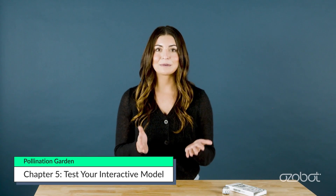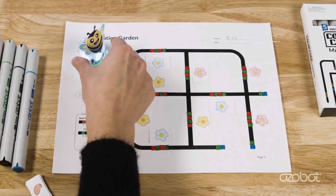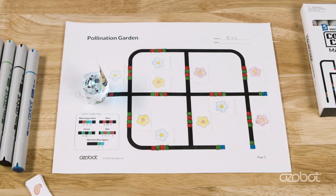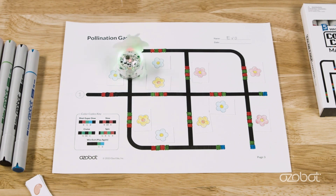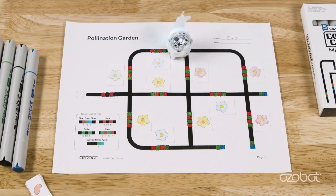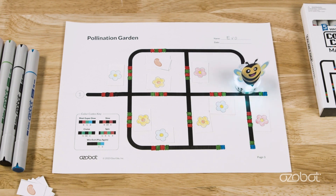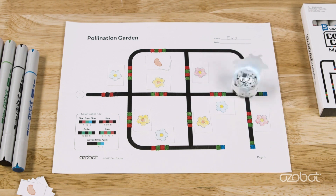Your garden map is complete and your pollinator bot is ready — it's time to test out your model. Put your pollinator on start and watch it move to different flowers in the garden to see which flowers get pollinated. For example, my pollinator first moved to the blue flower and spun — this is where the pollinator picked up the pollen. Next it moved to a second blue flower and spun, so I placed a seed on that flower. Then it moved to a red flower, so I placed a seed there too.